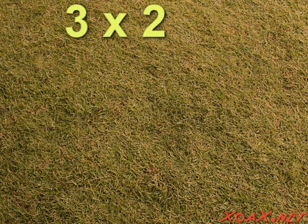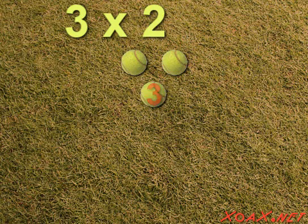If we want to multiply the numbers in the opposite direction, say 3 times 2, we count out three tennis balls, 1, 2, 3, and then make two groups like that one, 1, 2.